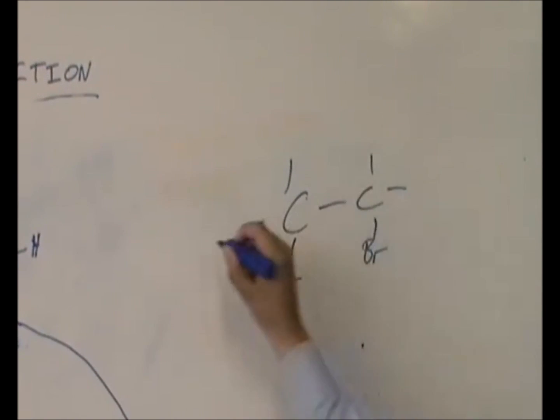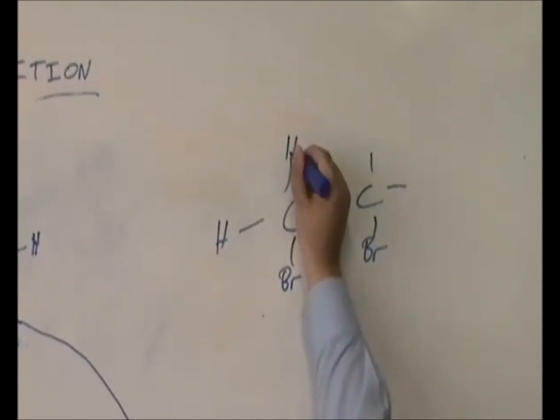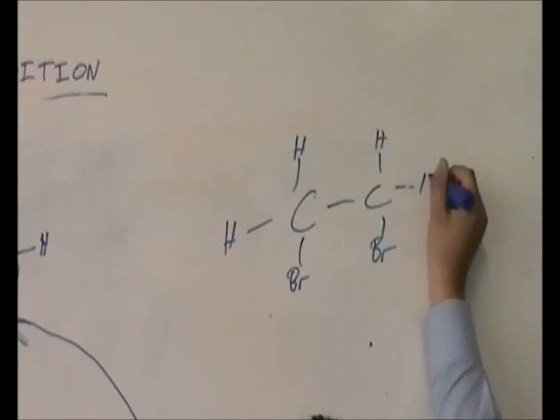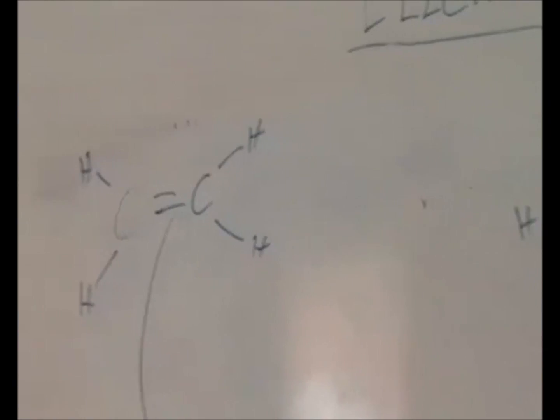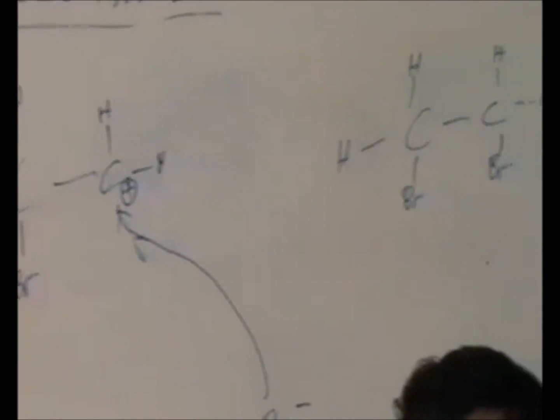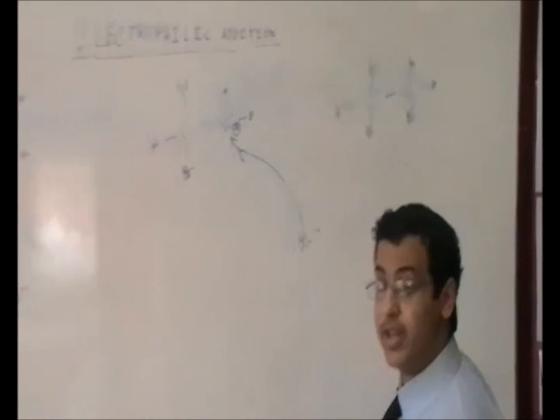Dibromo - two bromines here - and ethane, the two hydrogens that were on the molecule previously. This makes dibromo ethane, and that is basically the process of electrophilic addition.